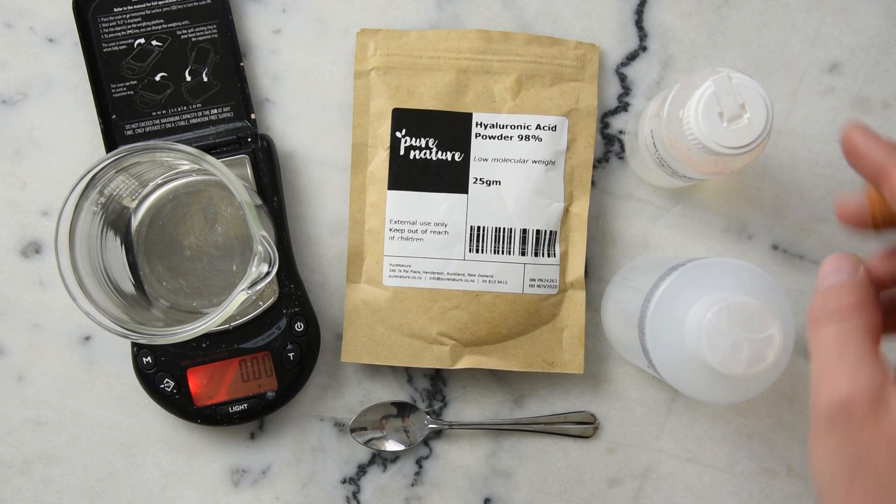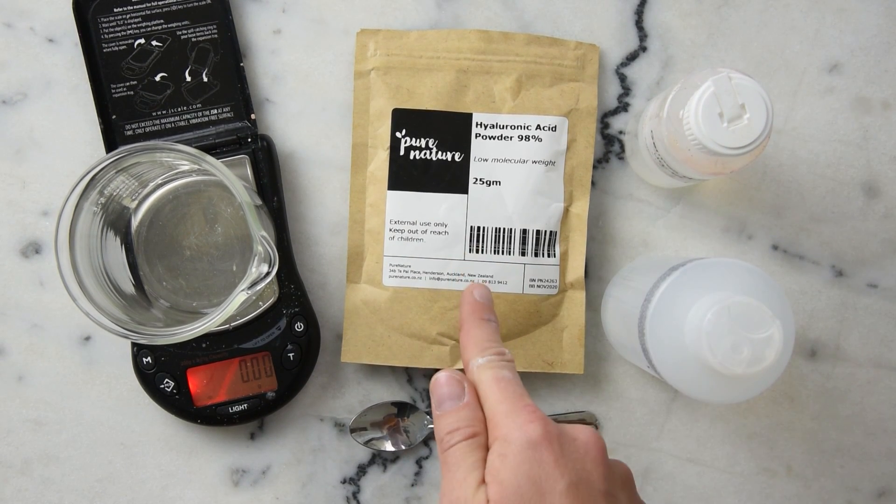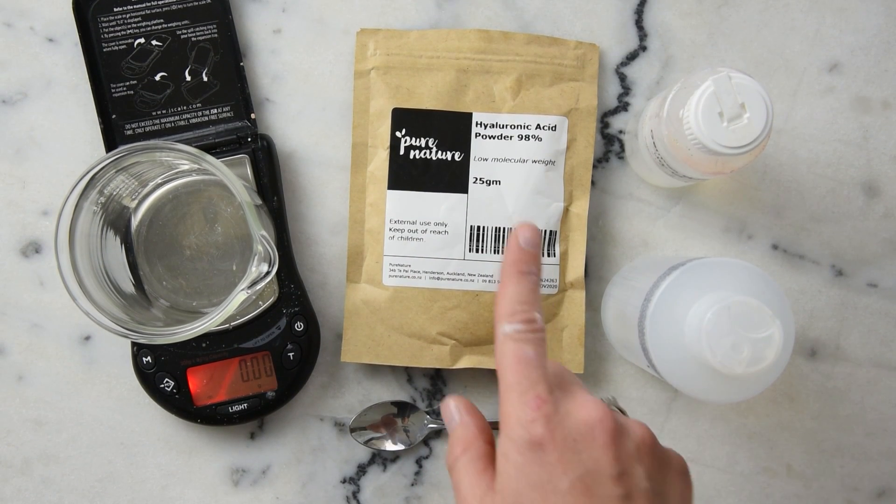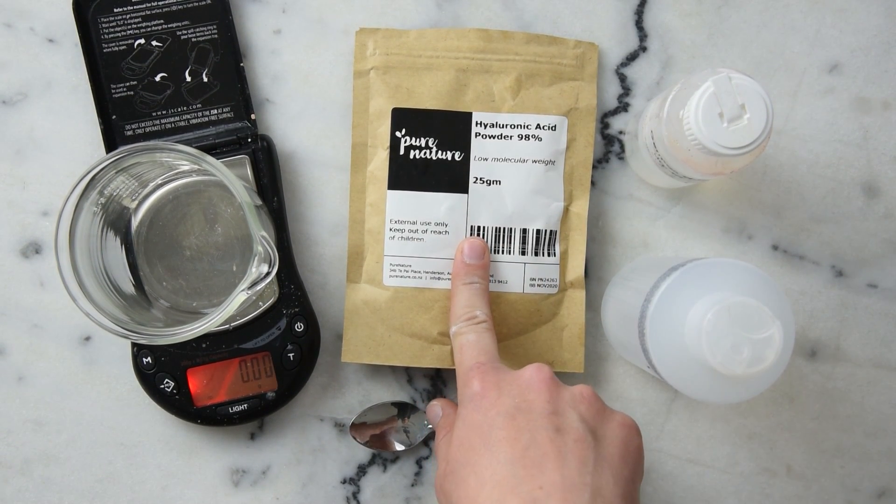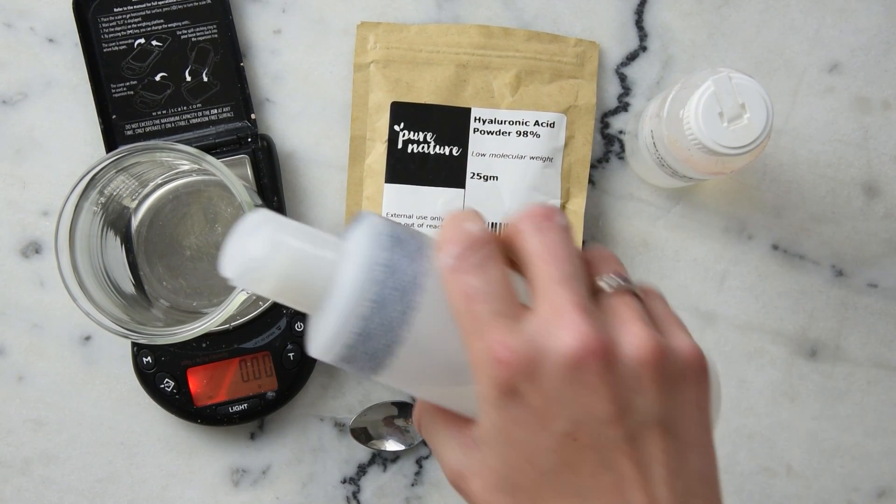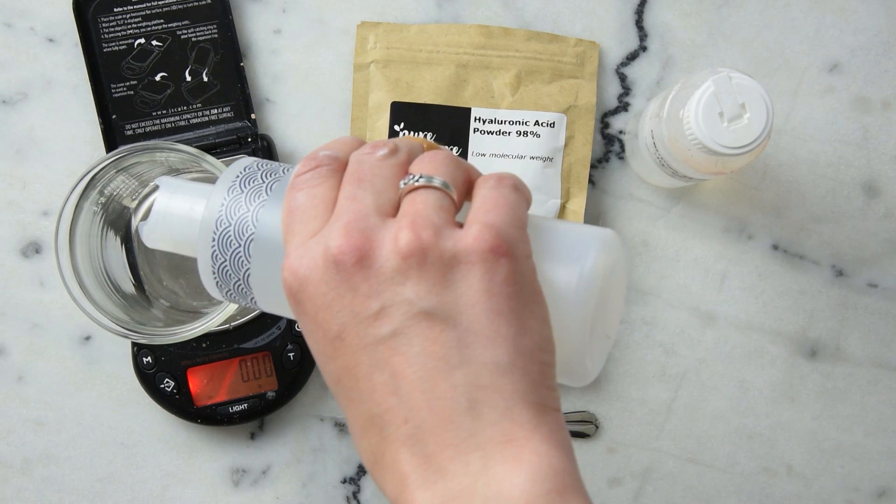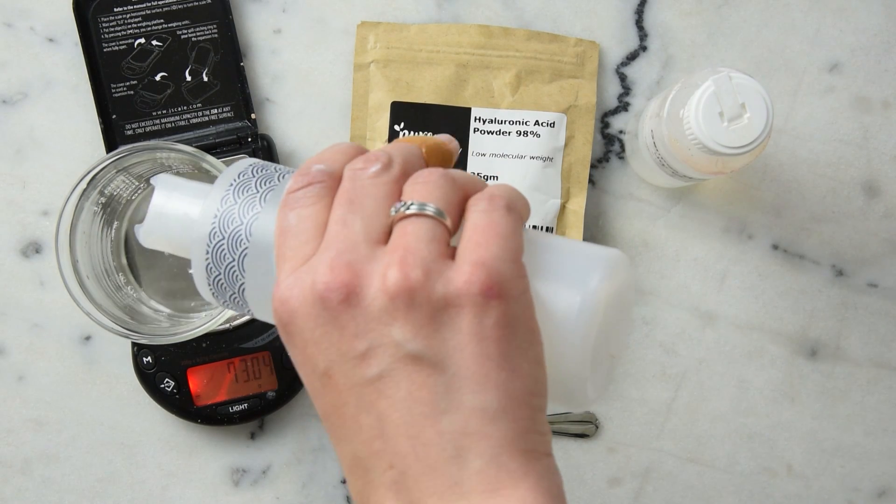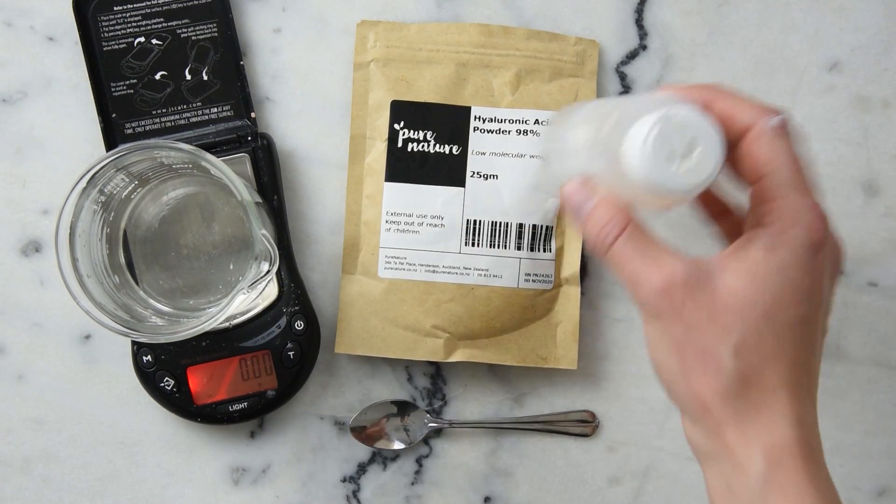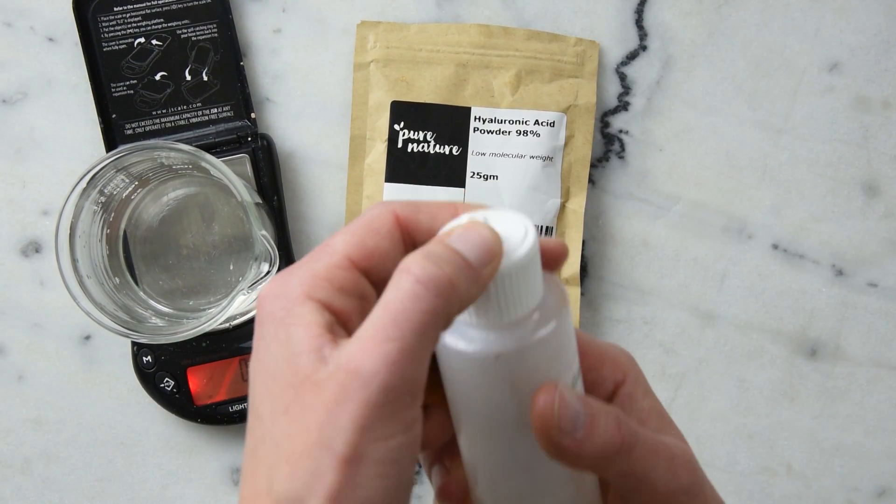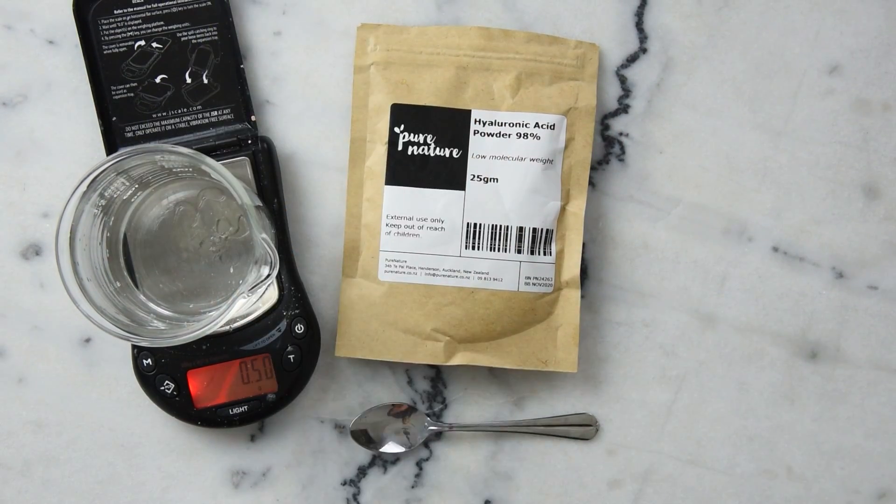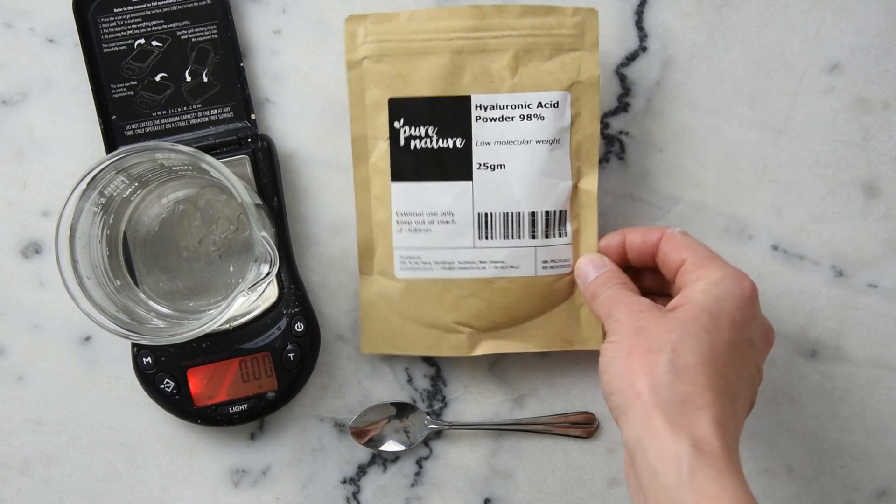Then we top it up to 100 grams with one gram of hyaluronic acid, which gives us a 1% solution. This hyaluronic acid was a gift from the lovely folks at Pure Nature, so huge thank you to them. So that's 98.5 grams water, half a gram of liquid germal plus—this is our preservative—and one gram of hyaluronic acid powder.